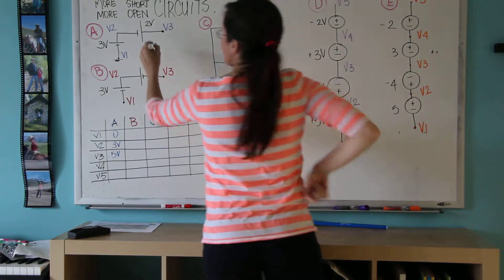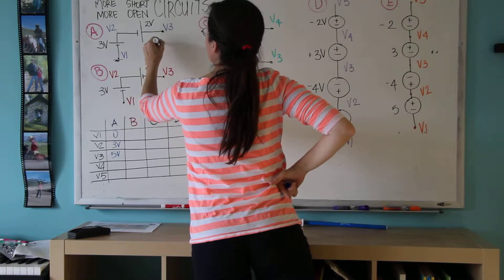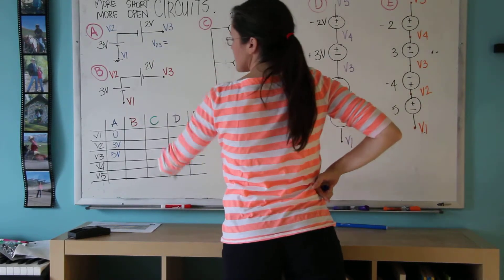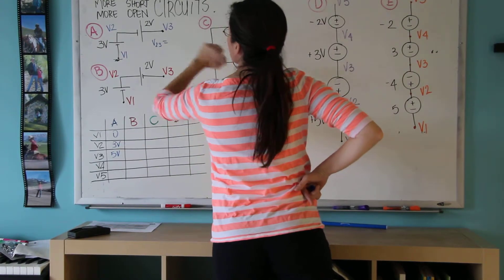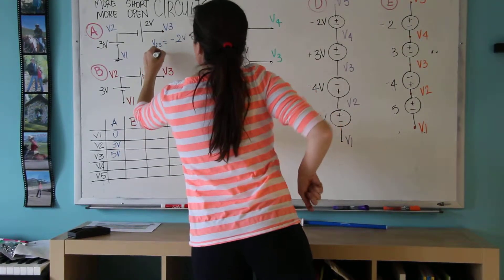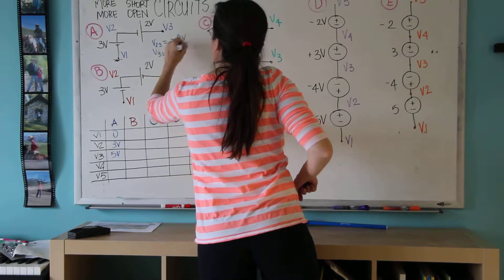Now the catch, the only catch here is if I were to ask you what's V23, this means V2 minus V3. It's 3 minus 5, it would be minus 2 volts. If I were to ask V32, this would be 2 volts.